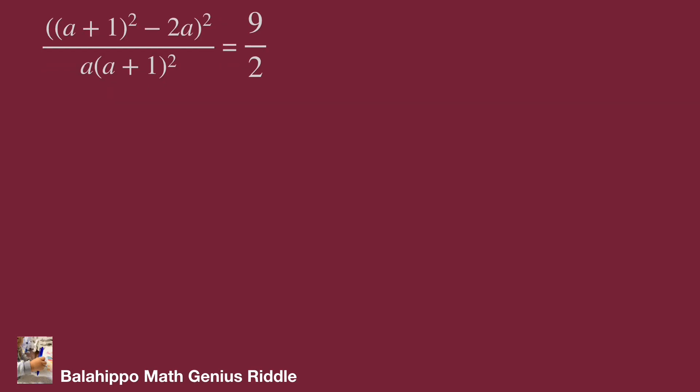We have (a + 1)⁴ - 2 times 2a(a + 1)² + 4a² over a multiplied by (a + 1)² equal to 9 over 2. A great improvement. There are a + 1 factors in this fraction.